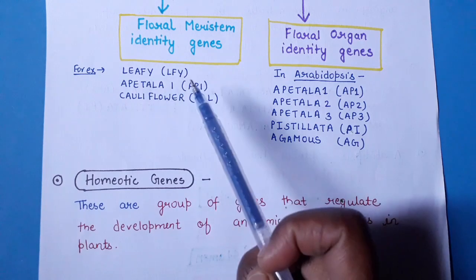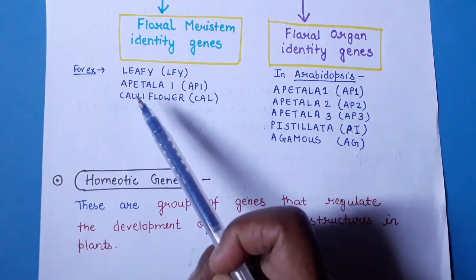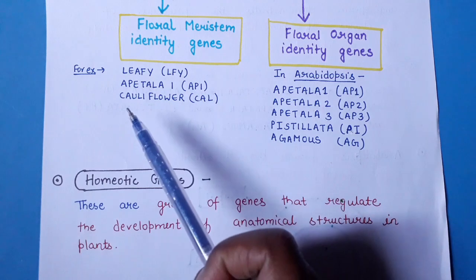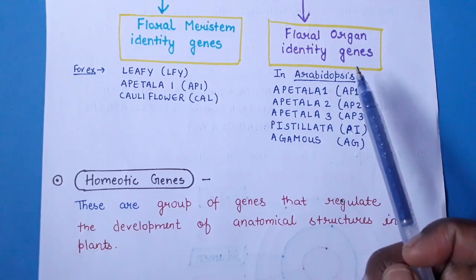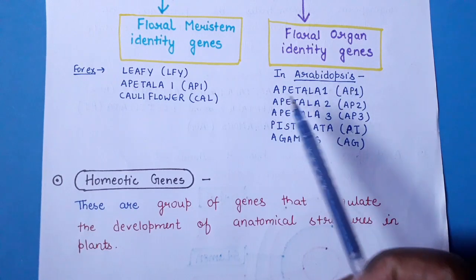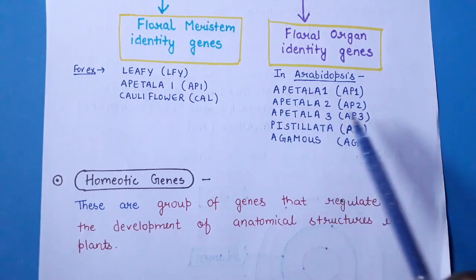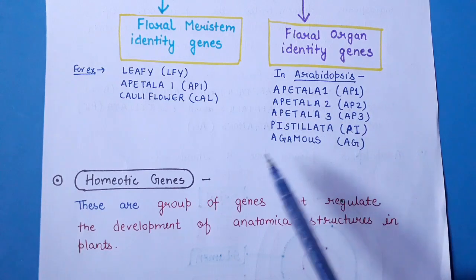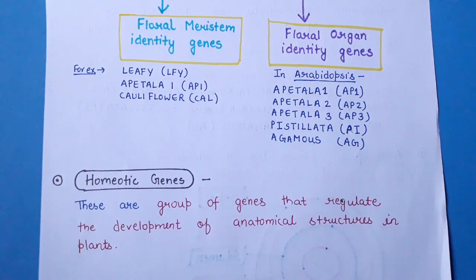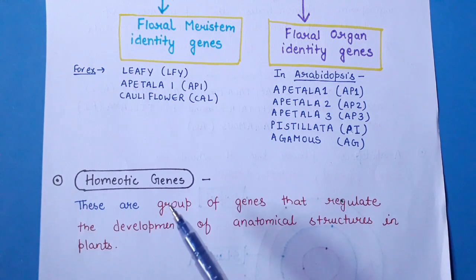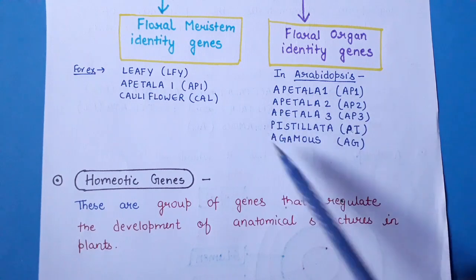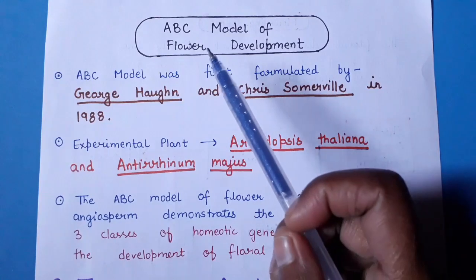Examples of floral meristem identity genes include LEAFY (LFY), APETALA 1 (AP1), and CAULIFLOWER (CAL). Floral organ identity genes in Arabidopsis include APETALA 1, APETALA 2, APETALA 3, PISTILLATA (PI), and AGAMOUS (AG). Homeotic genes are a class of genes that regulate the development of certain anatomical structures in plants, and in flower development these are the homeotic genes we will discuss.